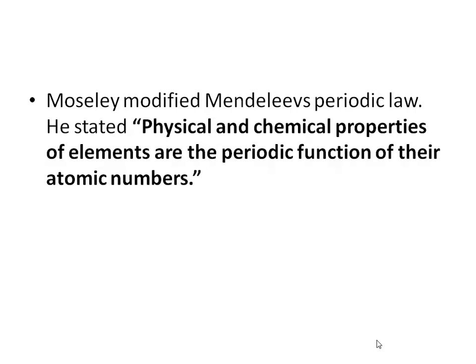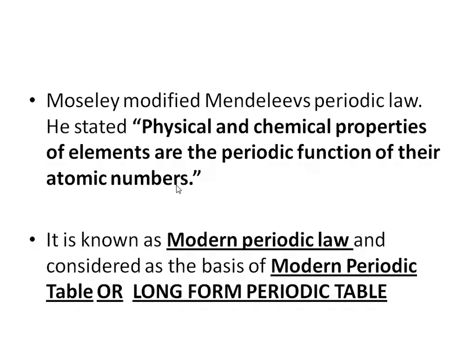In his modification, Moseley stated that the physical and chemical properties of elements are periodic functions of their atomic number. So the key change made by Moseley for the modern periodic table is the use of atomic number instead of atomic mass. The long form periodic table is based upon the arrangement of elements in the increasing order of atomic number. This statement is known as the modern periodic law.